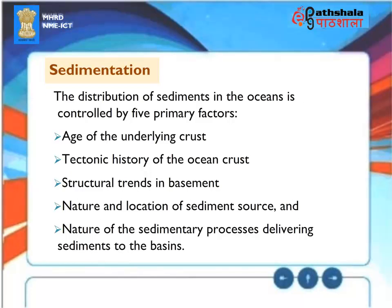Sedimentation: The distribution of sediments in the oceans is controlled by five primary factors: the age of the underlying crust, the tectonic history of the ocean crust, structural trends in the basement, the nature and location of sediment sources, and the nature of the sedimentary processes delivering sediments to the basins.